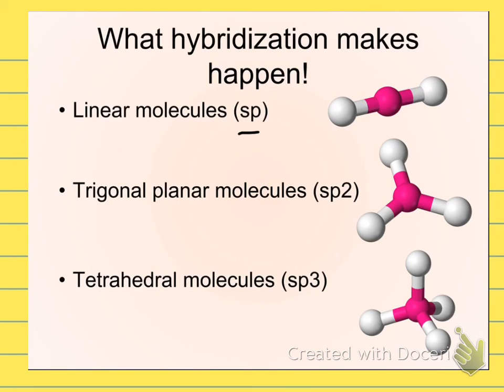We can see sp orbitals, which give us linear molecules. We can see sp2 orbitals, which give us trigonal planar molecules, and of course we're already familiar with the tetrahedrals, things like methane, that give us the sp3 orbitals.